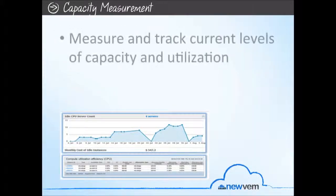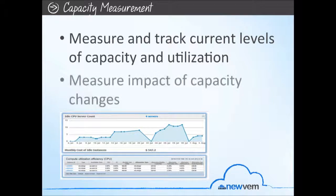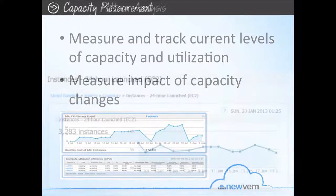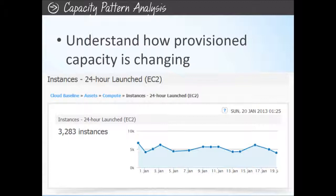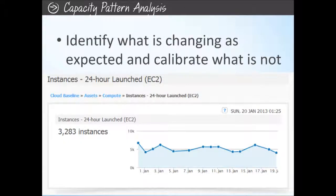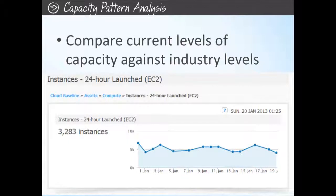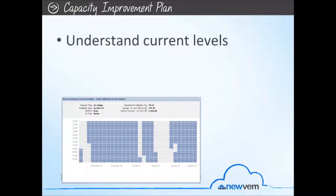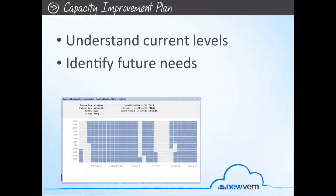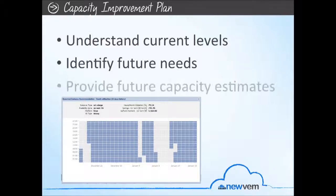Capacity measurement allows you to continuously measure and track current levels of capacity and utilization, and measure impact on utilization and business metrics. Capacity pattern analysis enables you to understand how your provisioning capacity for each dimension is changing, identify what is changing as expected, and calibrate what is unexpected. Compare current levels of capacity and utilization with previous levels and how they stack against industry levels. Get access to historical levels of utilization and capacity and compare to your current patterns. With a Capacity Improvement Plan, you can understand current levels of capacity and utilization and identify future needs based on changing trends and projections. With hourly utilization pattern analysis, NewVim continuously tracks and analyzes complete resource utilization patterns and provides a down-to-the-hour picture for cloud consumption and usage behavior, as well as future capacity estimates.